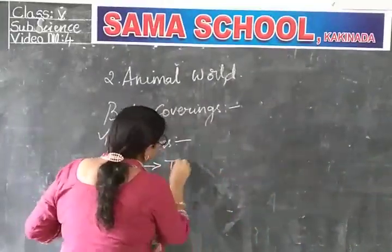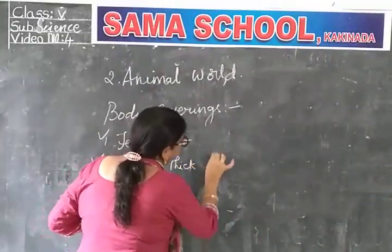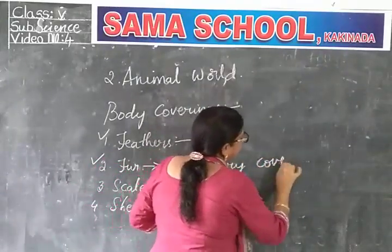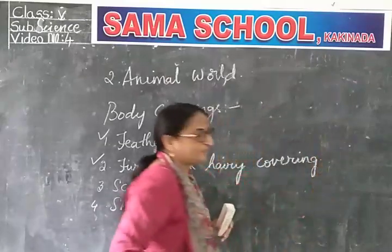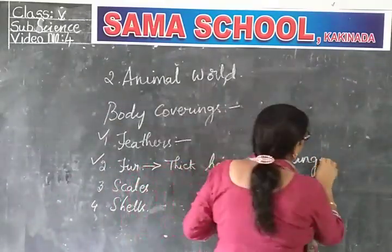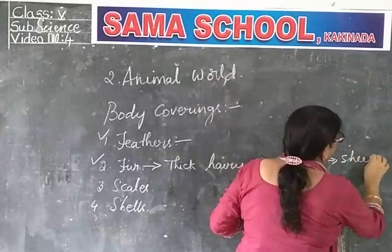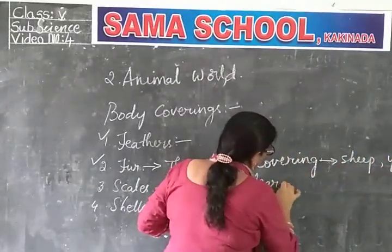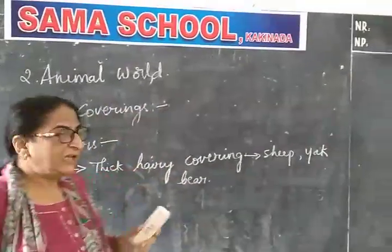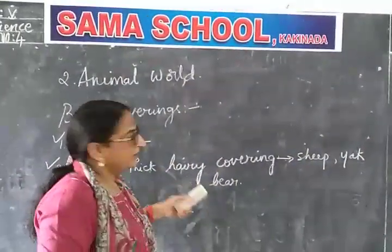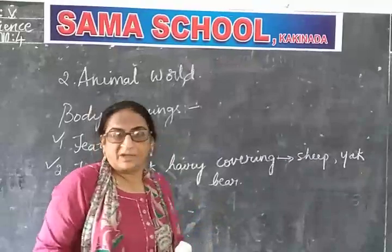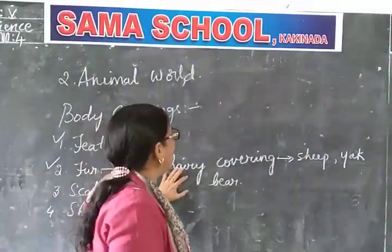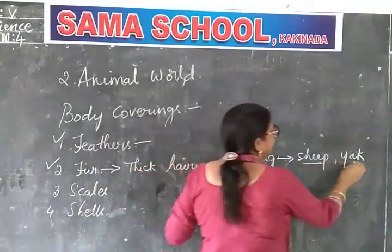Fur is a very thick, hairy covering. We find this hairy covering in sheep and yak. They have a very thick hairy covering, and this helps them to keep the body warm. Because sheep and yak are found mostly in hilly regions, and in those hilly regions, it is very cold.